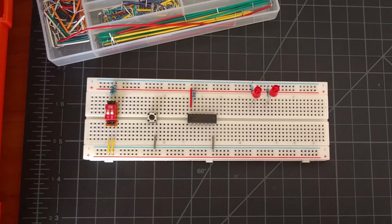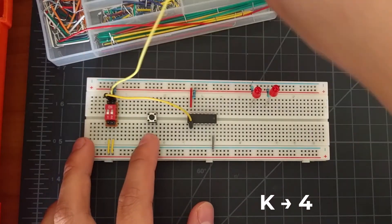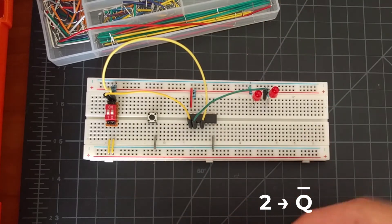Then, we'll connect pin J to pin 1, pin K to pin 4, pin 2 to Q-bar.